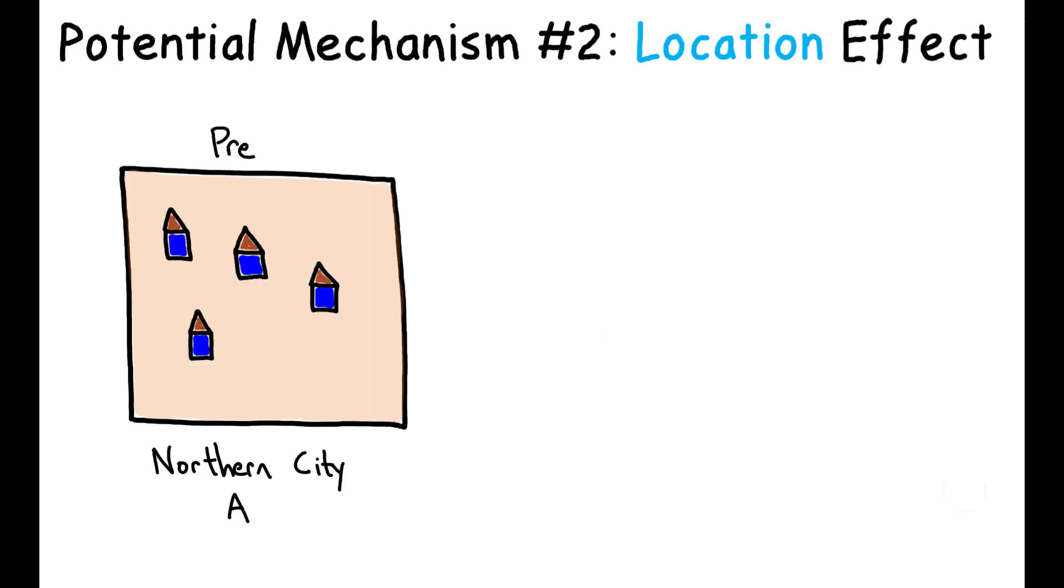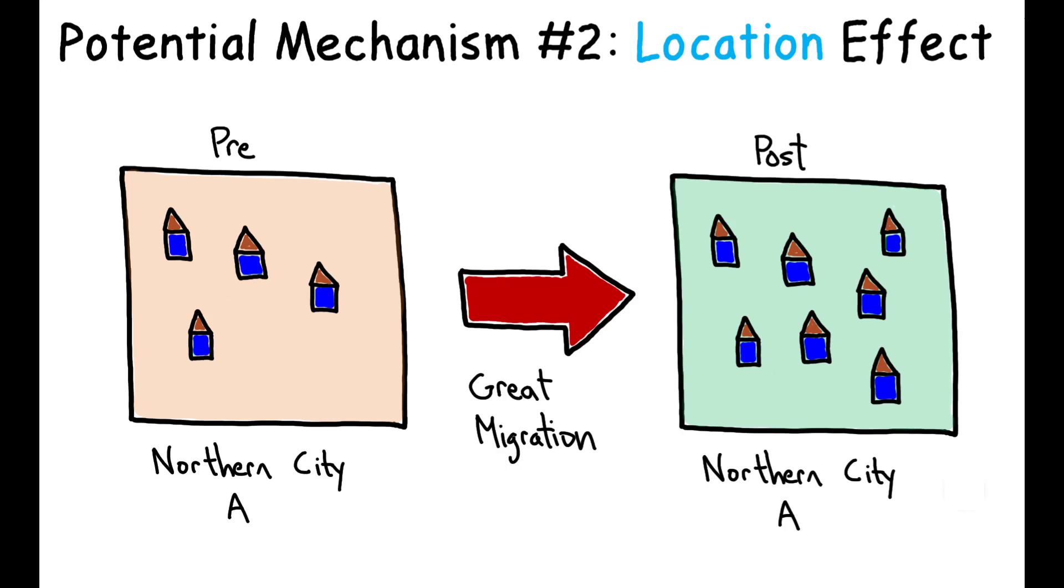The second potential mechanism, called the location effect, is that, in response to these migration inflows, the cities themselves changed in ways that had a detrimental effect on their ability to facilitate black upward mobility. In this scenario, even if migrant families were of the same mobility type as incumbent households, average income mobility may decline in the long term due to changes in the environment.